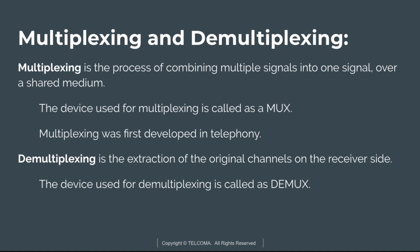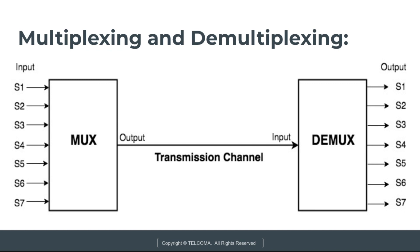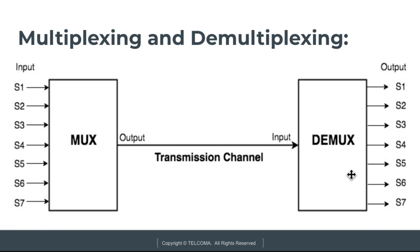The device used for demultiplexing is also known as demux. This diagram shows how mux and demux work. Multiple signals — s1, s2, s3 up to s7 — are transmitted to the multiplexer. The multiplexer combines these signals into one, which is transmitted over the physical transmission channel and acts as the input to the demux.